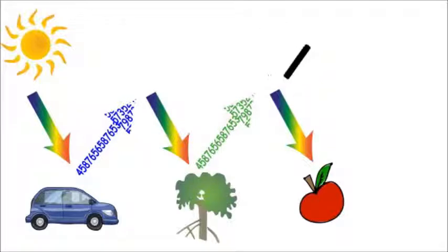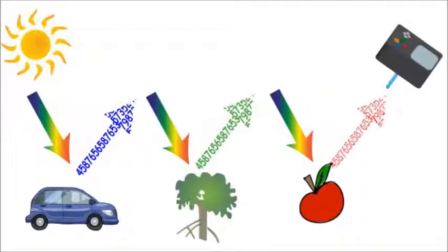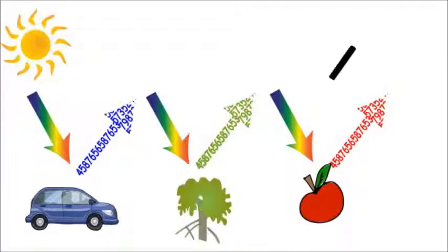Unique light measurements help us to identify features in the environment, for example trees are green, and to link our observations with biophysical parameters. For example, the level of tree greenness can be linked to vegetation health.